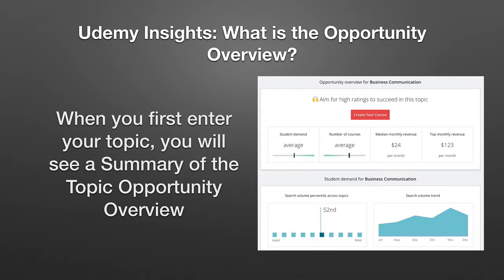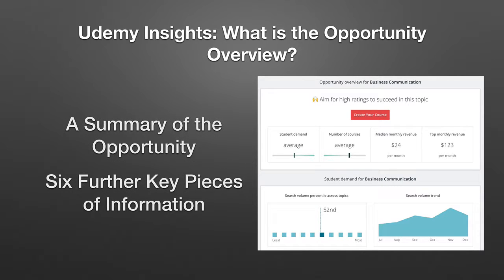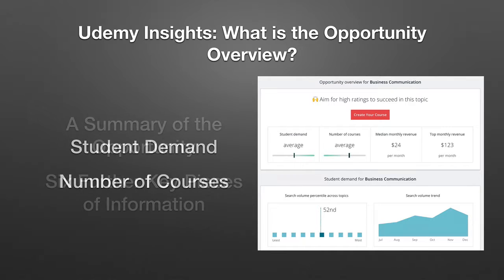This one happens to be: aim for high ratings to succeed in this topic. That's normally for where student demand is high and the number of courses are high. In this case, the supply-demand curve is balanced, so it's also saying you've got to really stand out. But you get these six key pieces of information as well, and they really set the stage for looking at the topic.